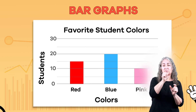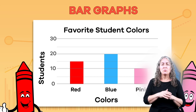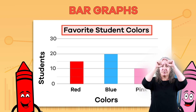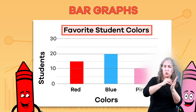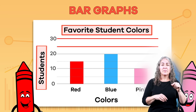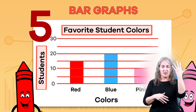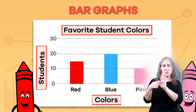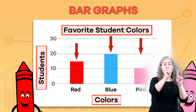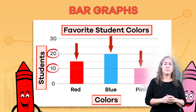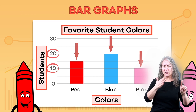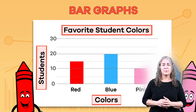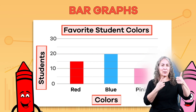This graph is about students' favorite colors instead of field trips. The bar graph has a title on the top: Favorite Student Colors. On the left side of the graph, there are numbers as well as the word 'students' — each line on the graph represents 5 students. At the bottom of the graph is the word 'colors,' and each bar represents a different color. The top of each bar touches a line that represents the number of students that like that color. So, 15 students like red, 20 students like blue, and 10 students like pink.